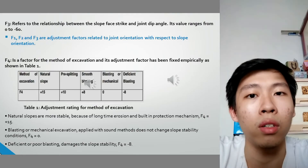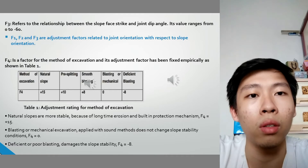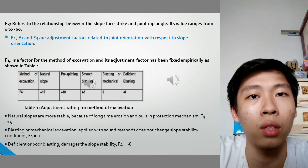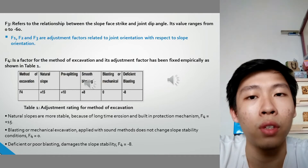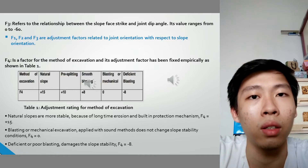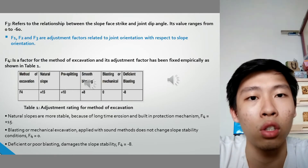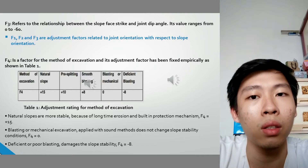Factor 3 refers to the relationship between the slope face strike and joint dip angle. Its values range from 0 to negative 60. Factors 1, 2, and 3 are adjustment factors related to joint orientation with respect to slope orientation.